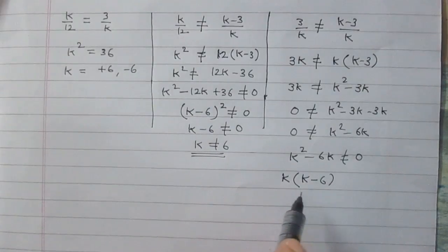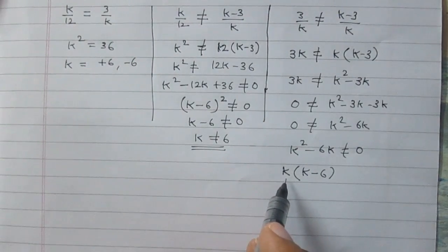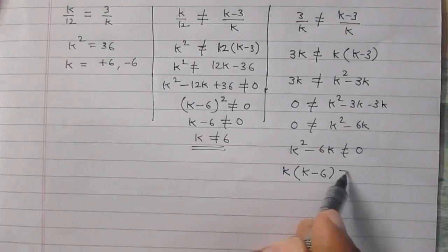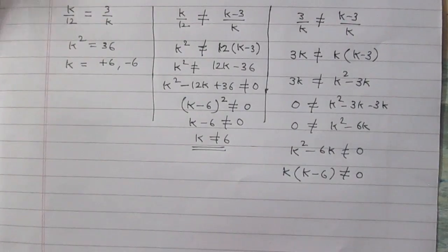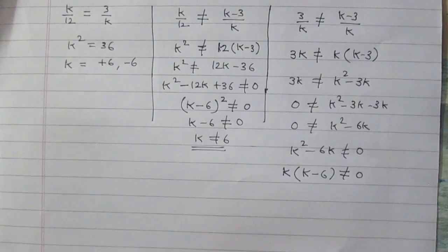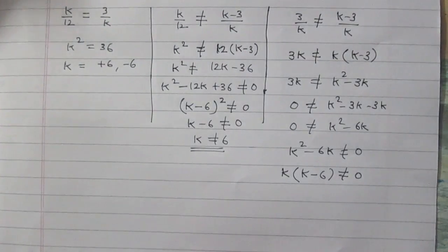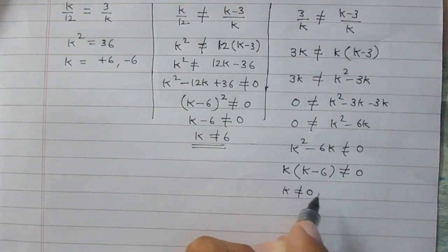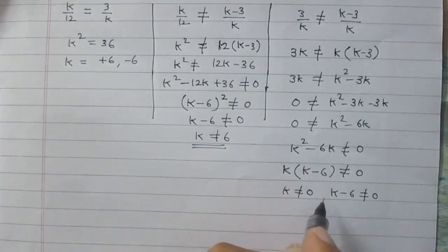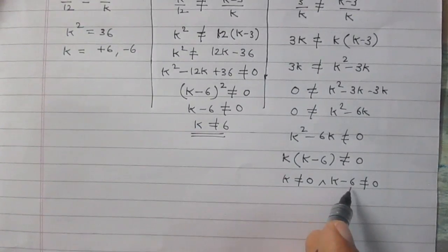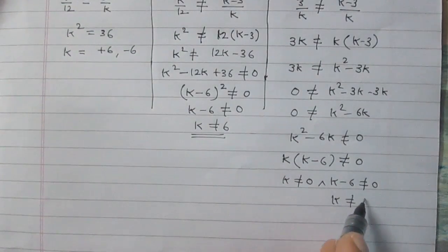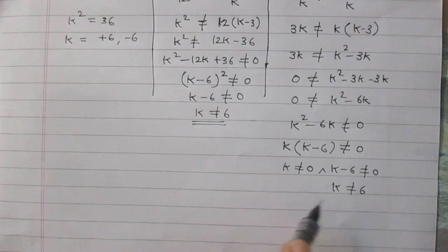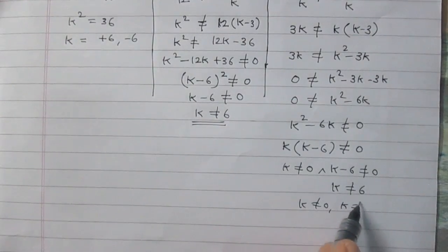We can factor k² - 6k as k(k - 6) ≠ 0. Since the product of two numbers is not equal to zero, neither number can be zero. So k ≠ 0 and k - 6 ≠ 0, meaning k ≠ 0 and k ≠ 6.